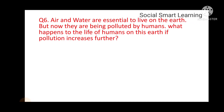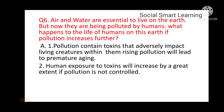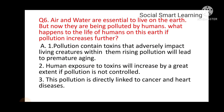Air and water are essential to live on the earth, but now they are being polluted by humans. What happens to the life of humans on this earth if pollution is increased further? Pollution contains toxins that adversely impact living creatures. Rising pollution will increase human exposure to toxins by a great extent, and if pollution is not controlled, it is directly linked to cancer and heart diseases.